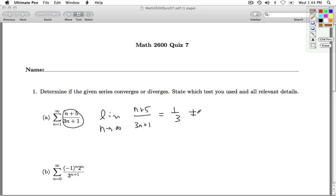And what's important about 1 third is that it's not 0. So we can say by the nth term test, the series diverges. And that will take care of letter A.